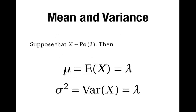This is the end of the video about the mean and variance of a Poisson distribution. Remember that if x has the Poisson distribution with parameter lambda, then both the mean and the variance are equal to lambda. Thank you very much for watching.